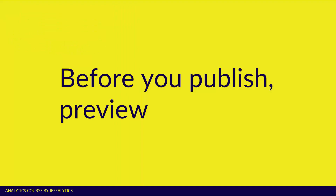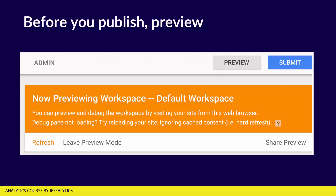So before you publish, preview. Here's what it looks like when you preview your workspace. You click on the preview button, and then you just go to your website, and you can see exactly what Google Tag Manager is doing behind the scenes. Previewing is a very essential part of troubleshooting and making sure that everything is working. Preview will be your best friend — in fact, if you're in Google Tag Manager, you're going to be in preview mode 9 to 10 times more often than you're going to be in publish mode.